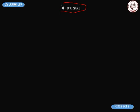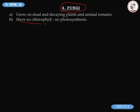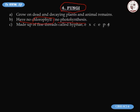Fungi — however you want to pronounce it — grow on dead and decaying plants and animal remains. You often find them growing on dead tree trunks since they love dead and decaying plant material. These fungi have no chlorophyll, which means they cannot produce food by the process of photosynthesis.